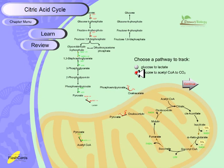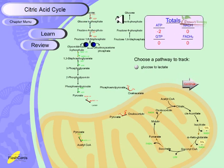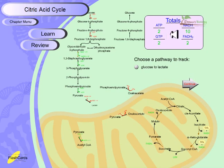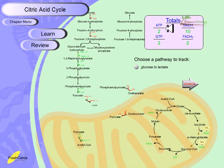Following glucose through to acetyl-CoA and finally to carbon dioxide through the Krebs cycle: glycolysis produces two ATP and two NADH, then the citric acid cycle produces no ATP but two GTP, five NADH, and one FADH2. At the end of both glycolysis and the citric acid cycle combined, we have generated two ATP, two GTP, ten NADH, and two FADH2.